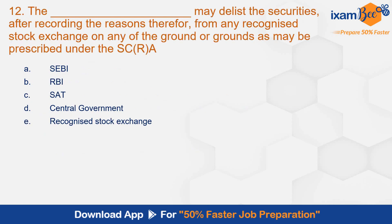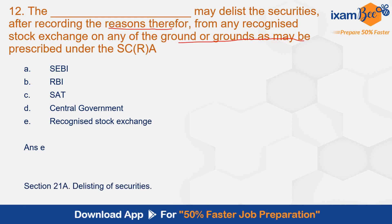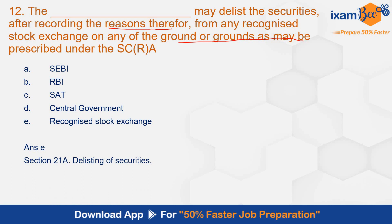Question number 12: 'The [blank] may delist the securities after recording the reasons therefor from any recognized stock exchange on any of the grounds or grounds as may be prescribed under SCRA.' The correct answer is E, recognized stock exchange. The recognized stock exchange may delist the securities after recording the reasons on any ground or grounds as may be prescribed. This is as per section 21E.